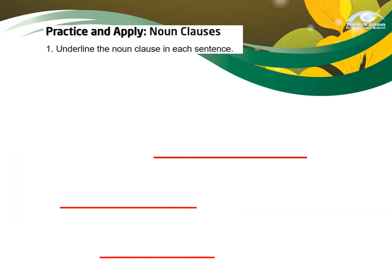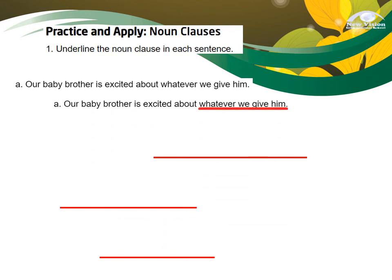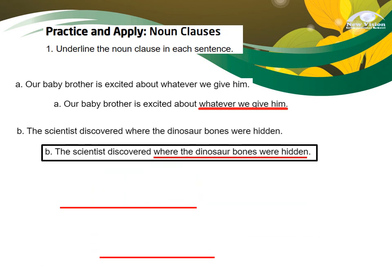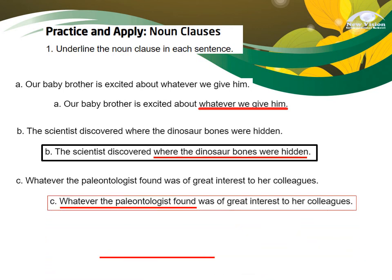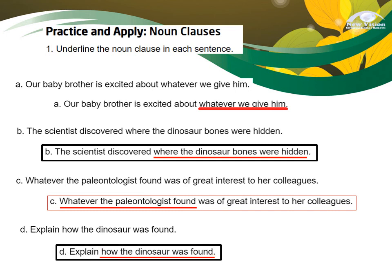Let's have a practice — underline or identify the Noun Clause in each sentence. Number one: 'Our baby brother is excited about whatever we give him.' The Noun Clause is 'whatever we give him.' Next: 'The scientist discovered where the dinosaur bones were hidden.' The Noun Clause is 'where the dinosaur bones were hidden.' Next: 'Whatever the paleontologist found was of great interest to her colleagues.' The Noun Clause is 'whatever the paleontologist found.' And: 'Explain how the dinosaur was found.' The Noun Clause is 'how the dinosaur was found.' Notice that Noun Clauses are introduced by subordinating conjunctions: whatever, where, how.